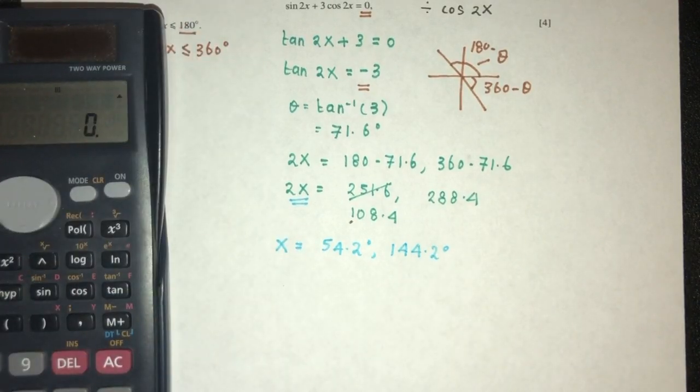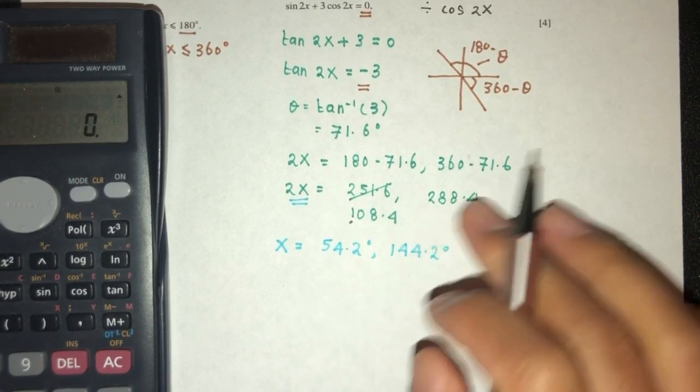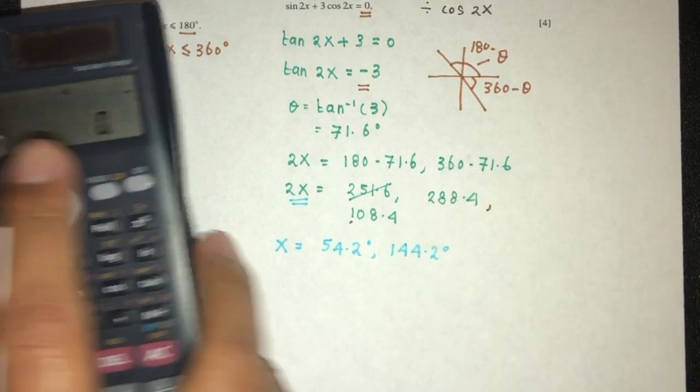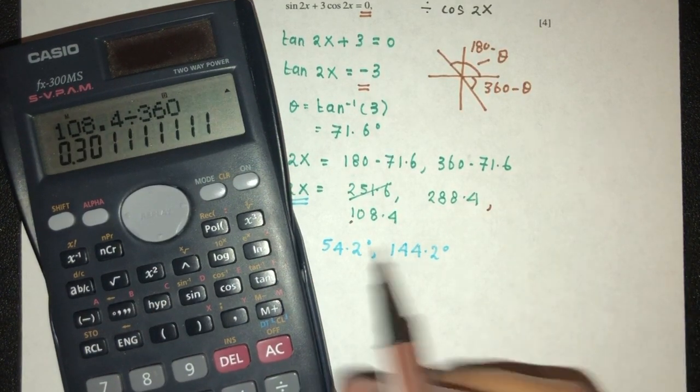Because here we have 2x, we can add 360 to those values to see if in case we have anything else. But in my opinion, or from what I can see, we should not. But you have nothing to lose.